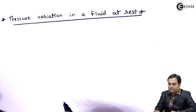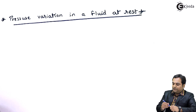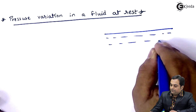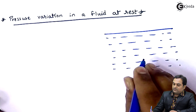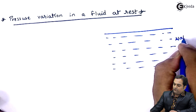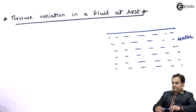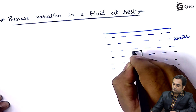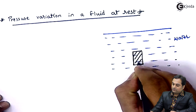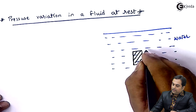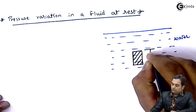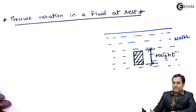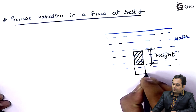To understand this pressure variation in a fluid at rest, here I'll draw a simple diagram. We have a huge mass of fluid — suppose I assume it to be water. Now if we have an element kept inside this water, this would be the height of the element and this would be the width of the element.